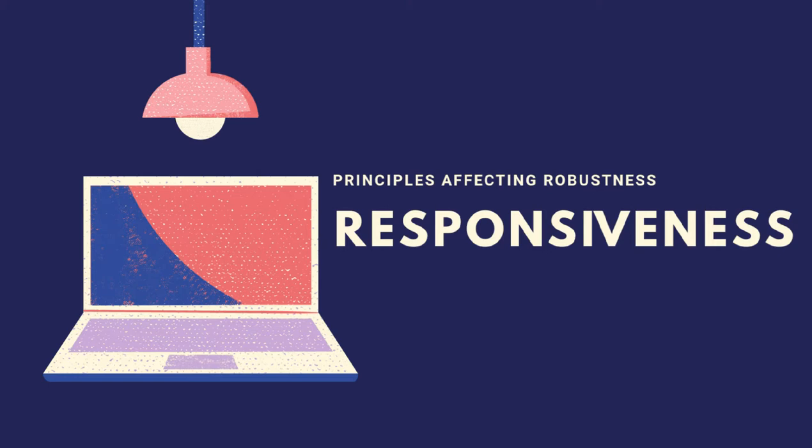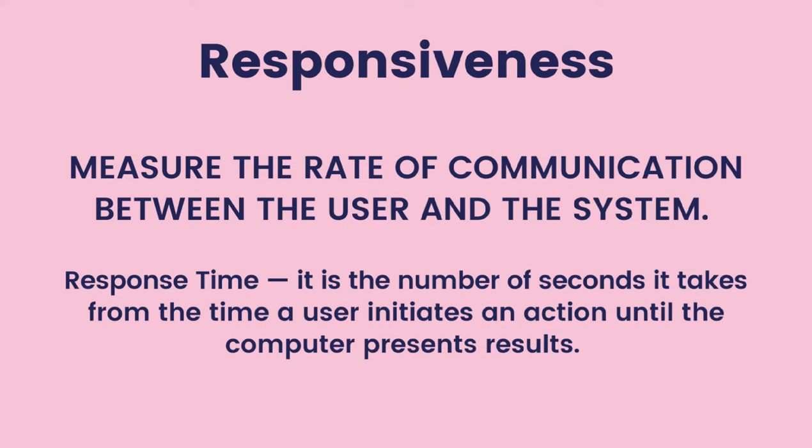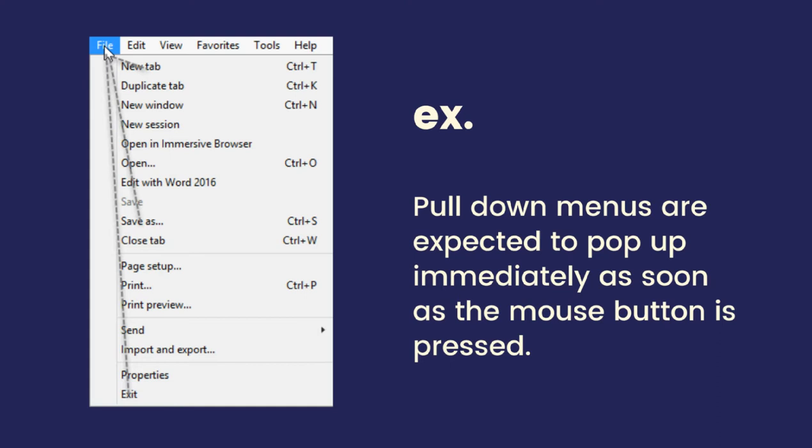Responsiveness is the third principle affecting robustness. It measures the rate of communication between the user and the system. The best example of it is the pulldown menus that are expected to pop up instantaneously as soon as the mouse button is pressed, as you can see in the photo — click the file icon.